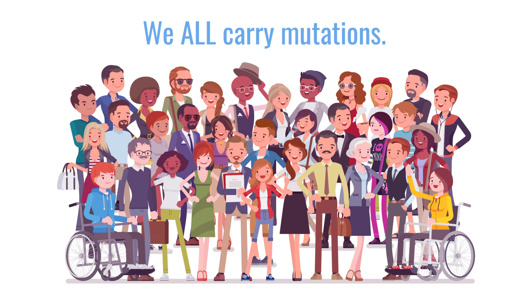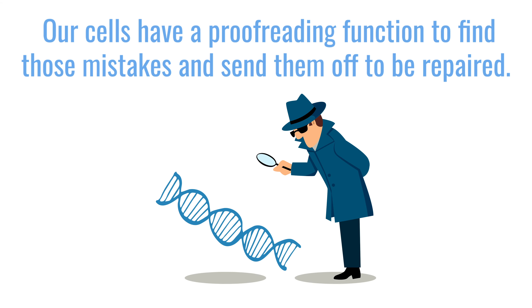We all carry mutations. There is no such thing as totally normal DNA. We all have mutations. We all expose ourselves to sunlight. We all expose ourselves to different foods. We all make mistakes as our DNA is being copied. Fortunately, there is an incredible proofreading function when we copy DNA, so that the cells have lots of repair mechanisms to repair mutations. But sometimes, even those slip through the cracks.